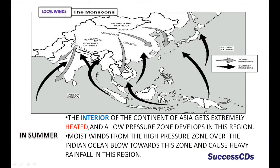In summer, the interior of the continent of Asia gets extremely heated and a low pressure zone develops in this region. Moist winds from the high pressure zone over the Indian Ocean blow towards this zone and cause heavy rainfall in this region.